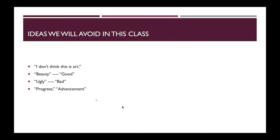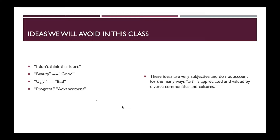Next, we're going to move beyond ideas of progress and advancement — the conception that as you go through the chronology of art and time, things get better or art gets more advanced. That's not the case in art history, as we will see. The way images look and the way things are constructed is all about what the culture is valuing at the moment. That is not an effect of progress or advancement — it is what that culture was valuing at that particular time. All of these ideas are very subjective and do not account for the many ways art is appreciated by diverse communities and cultures.